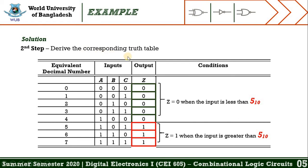The second step is to derive a corresponding truth table for the condition. As you can see from the truth table, there are four columns: one is the equivalent decimal number, another is inputs, another is output, and the last one is the condition from the question. Since the input is 3-bit binary, we get 8 combinations.